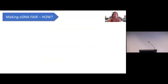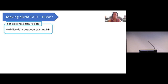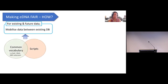Now we move on to how we're going to make eDNA FAIR. As you saw through those examples, there has been a huge effort to create eDNA databases and make them accessible. What we need to do now to make them interoperable and reusable is to mobilize data between existing databases. To do that, we need to establish a common vocabulary for data fields — those vocabularies can be DAO, INCORE, MIxS, and GBIF's DNA-derived data extension, which has a list of data fields with set vocabularies, most of which came from DAO, INCORE, and MIxS. Then we can develop scripts to format existing data into a common format.